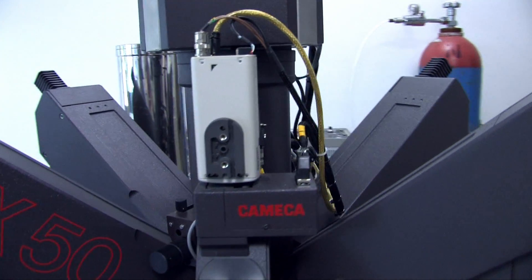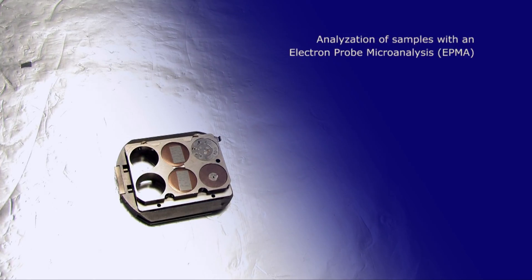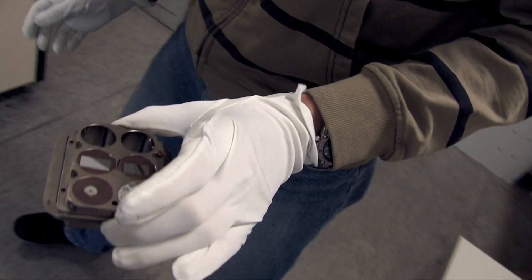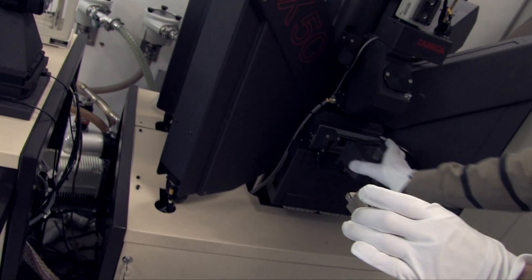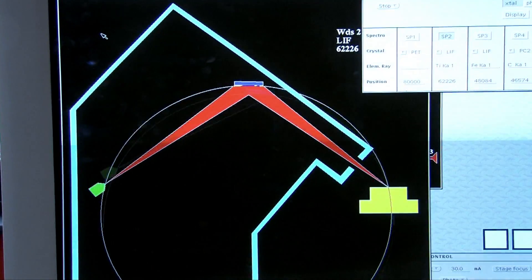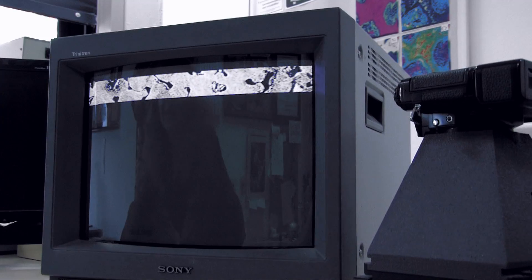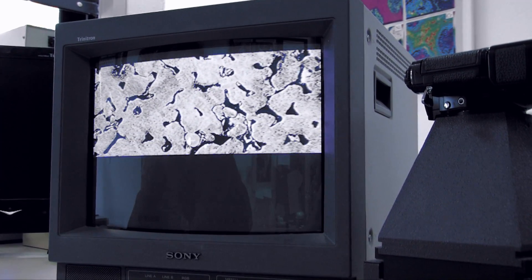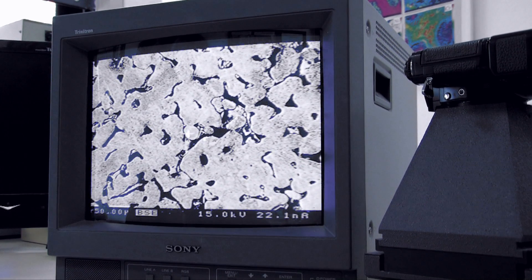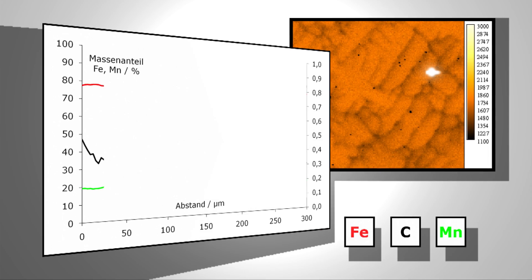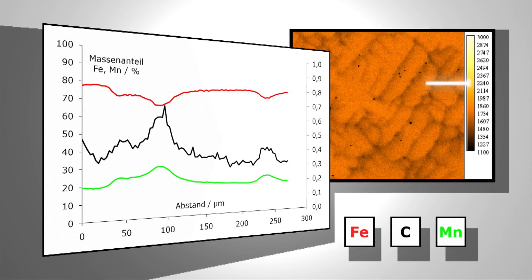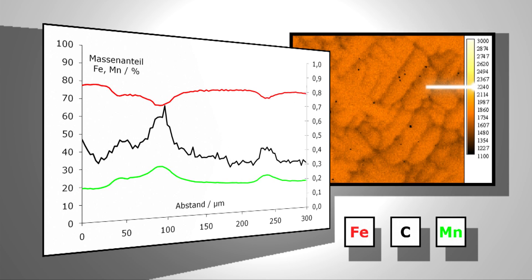Rapidly solidified regions enclose areas which solidified last. For the FeMnC system, these last solidified areas show high concentrations of manganese and carbon, whereas those areas which solidified first include low concentrations of manganese. These concentration differences can be demonstrated with mappings and line scans at the Institute for Electron Microscopy.